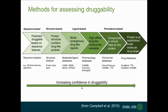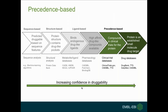We have a number of different methods for assessing druggability. These range from precedence-based methods, where we already have compounds in the clinic or approved drugs binding to that target, giving the highest confidence. Through to ligand-based methods, where we may have endogenous ligands or tool compounds. Then structure-based methods if a crystal structure is available. And finally, sequence-based methods for proteins where we have no other information.